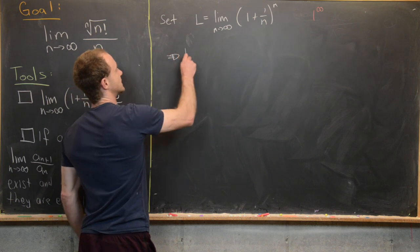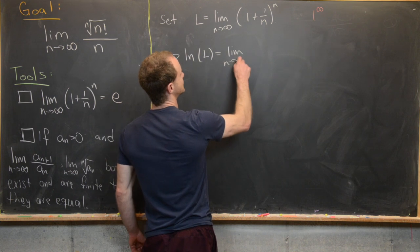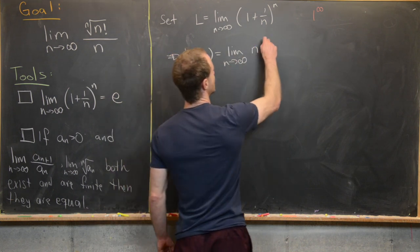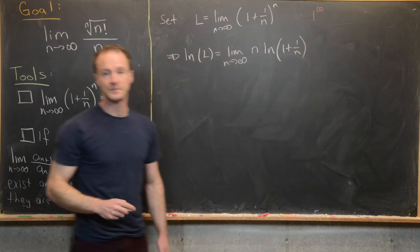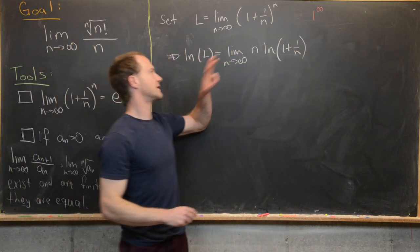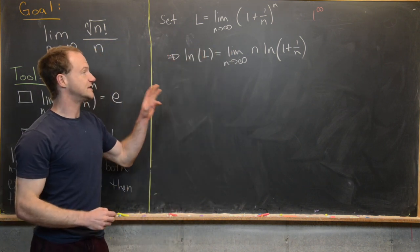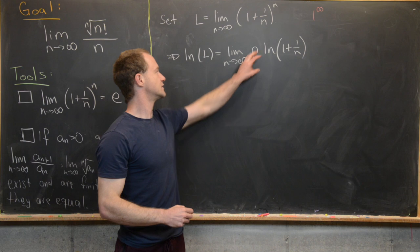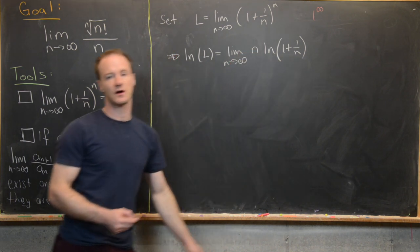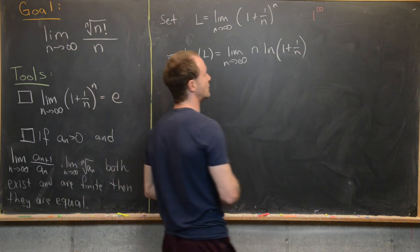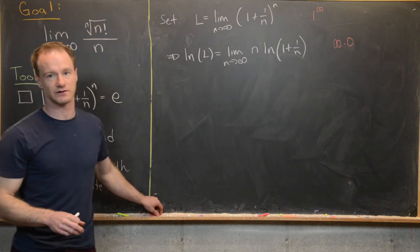Generally, to evaluate indeterminate forms of this type, we pass to a logarithm. So the natural log of the limit equals the limit as n goes to infinity of n times the natural log of one plus one over n — using the logarithm property that brings the exponent down as a multiplier. As n goes to infinity, n goes to infinity while the log term goes to zero, so we've transformed this into an indeterminate form of type infinity times zero.